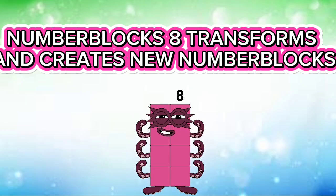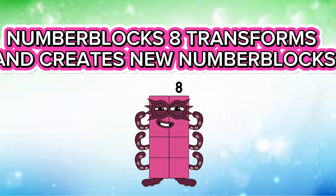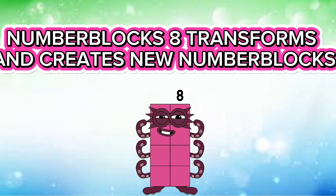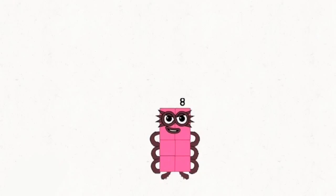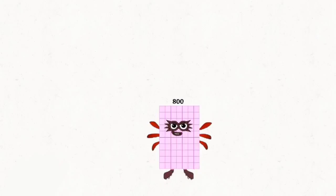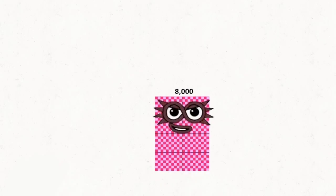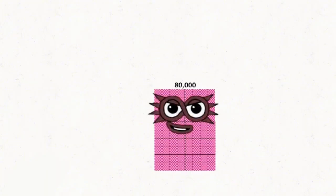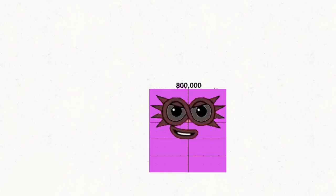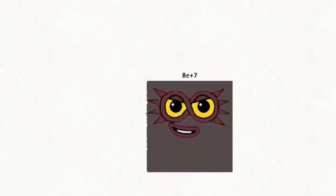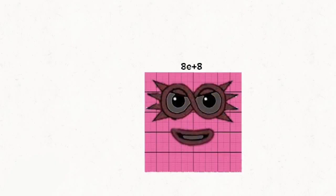Transforms and creates new number blocks. Eight. Eight hundred. Eight thousand. Eighty thousand. Eight hundred thousand. Eight million. Eighty million. Eight hundred million.